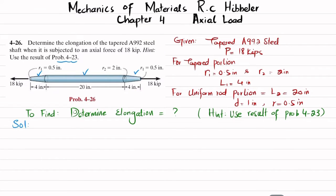So elongation delta is equal to P times L divided by pi times E times R2 times R1. That is for tapered portion.